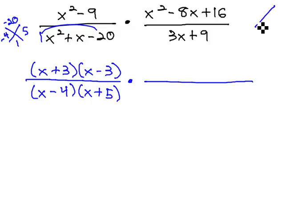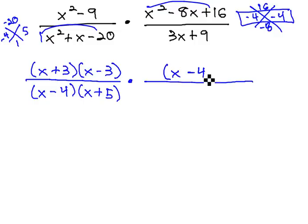The second numerator, also using the ac method, 16 and negative 8. The numbers would be negative 4 and negative 4. They match, so it's x minus 4 squared. And in the denominator, the GCF is 3, leaving us behind with x plus 3. I'm moving quickly through the factoring part, because by this point, we should be very comfortable factoring.